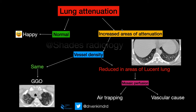Once there is an increased area of attenuation in the lung fields, look at the vessel density in the lucent areas and also in the areas of increased attenuation. If the vessel density is the same in both the lucent areas and in the increased areas of lung attenuation, then we call it ground-glass opacity. A classic example is COVID infection, which we are regularly seeing.